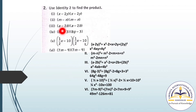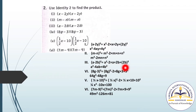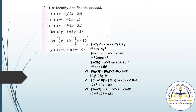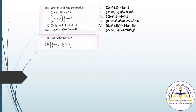For question number 3: (A - 2B) whole square equals A square minus 2 into A into 2B plus (2B) whole square. Simplifying: A square minus 4AB plus 4B square. In this manner you have to solve this question.